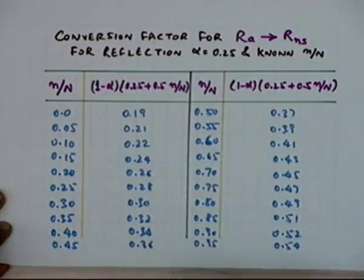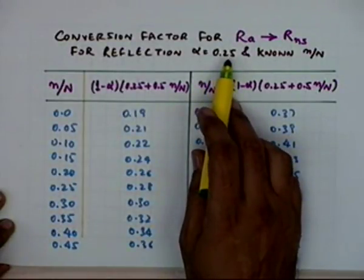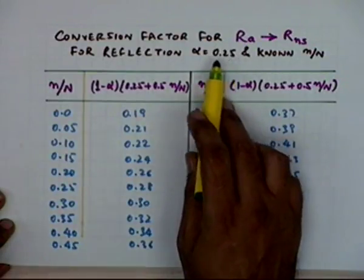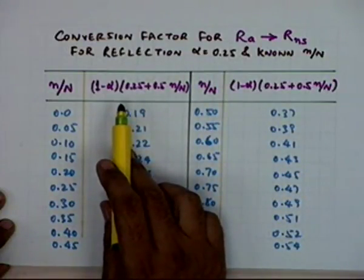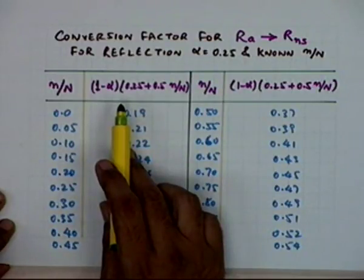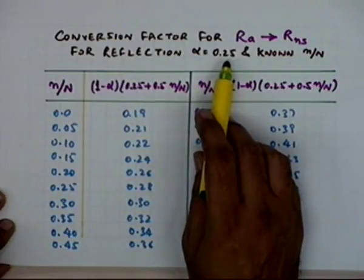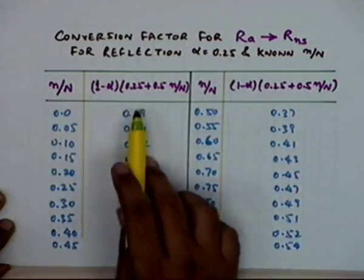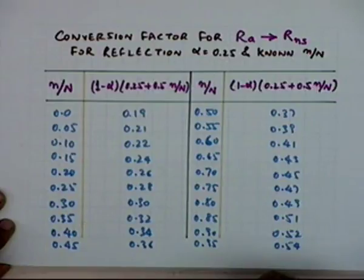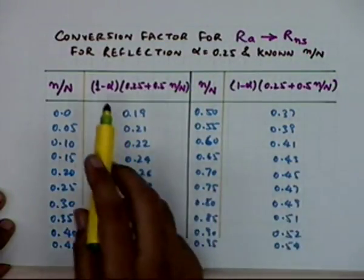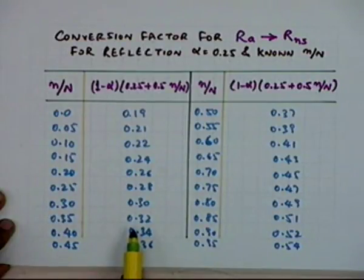For alpha equal to 0.25, a relationship is available and you can find out the conversion factor to be used. In general, this alpha for most cropped areas is 0.25 — that is 25% as I was mentioning. Since when we are computing evapotranspiration from crop areas, we can ensure that most of the time we are interested in surfaces where cropped areas are there. Otherwise, if using this equation for populated areas, urban areas, or water bodies, you can choose an appropriate alpha value.